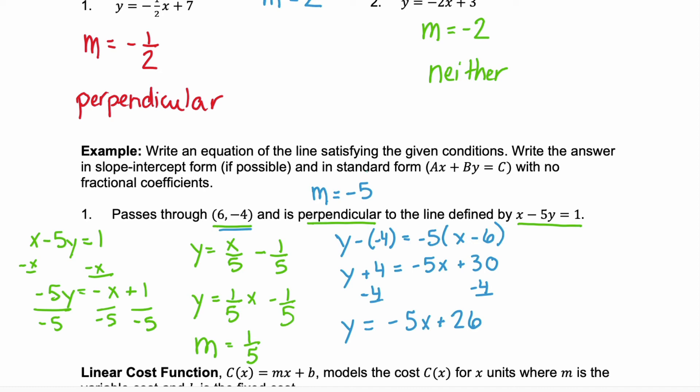But we also want to put it in standard form, right? Standard form is ax plus by equals c. To do that, we're just going to add 5x to both sides. So we have 5x plus y equals 26. So you have slope intercept form and then you have standard form.